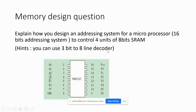A 3-to-8 line decoder lets you select one of eight outputs. You can see this is an actual IC that is used in real projects. By selecting inputs A2 to A0, you can cause one of the outputs to go high or low. At any time only one output is set; the others are reset — that's why it's called a decoder, not a mux.